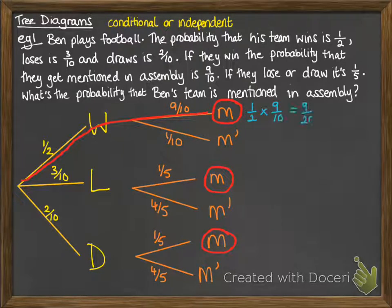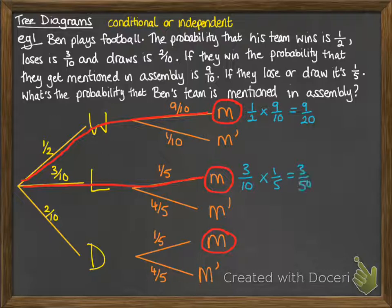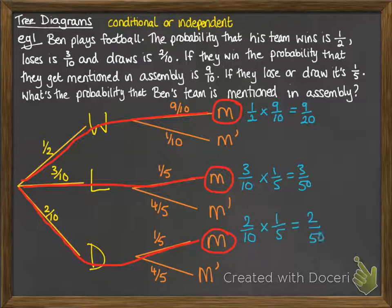Going along that first branch, we multiply half by 9 tenths to get 9 twentieths. The next way they could get a mention would be 3 tenths times 1 fifth. And the final way they could get a mention is 2 tenths times 1 fifth. There are three different options that would lead to them being mentioned in assembly, so we add up those three.